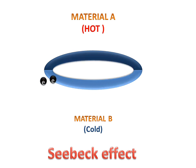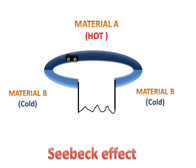This is called the Seebeck effect. Now if we cut the shell — we will cut this cold shell — and attach a load for the voltage, then what will happen? We cut this shell and attach a load for showing the voltage supply.